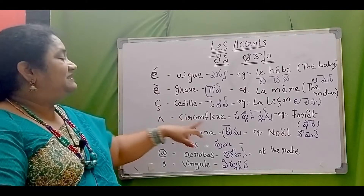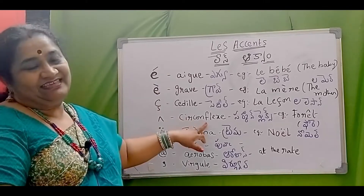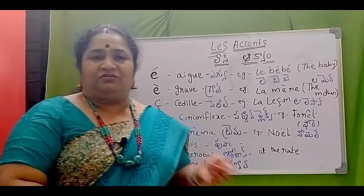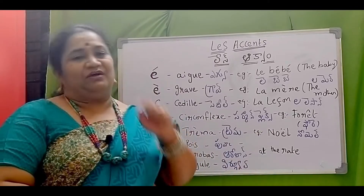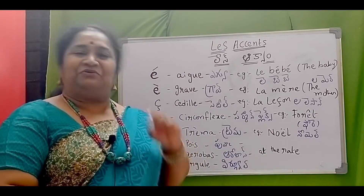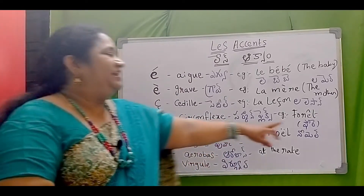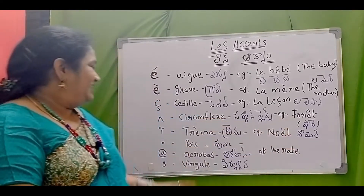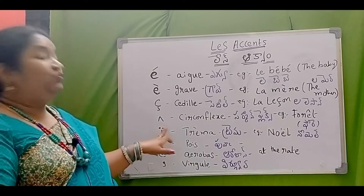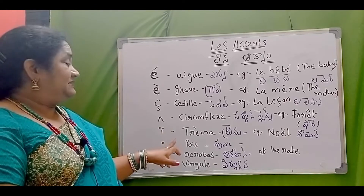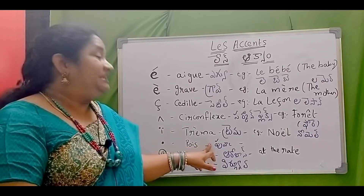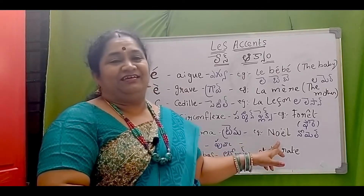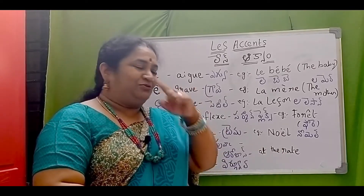Circumflex accent makes a difference — it gives a nasal sound, like a sound made through the nose. Example: forêt. Next, tréma — two dots — example: Noël — that also involves a nasal component.